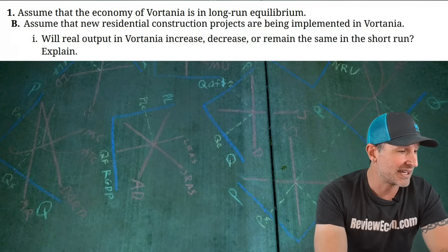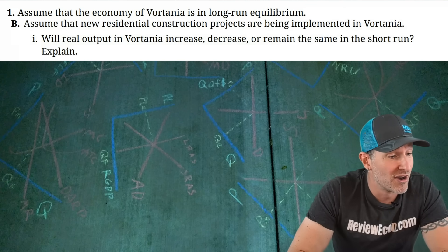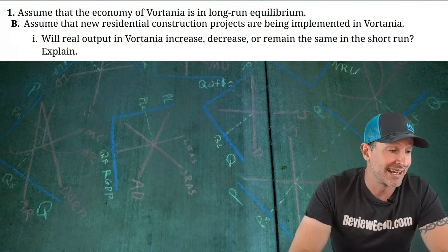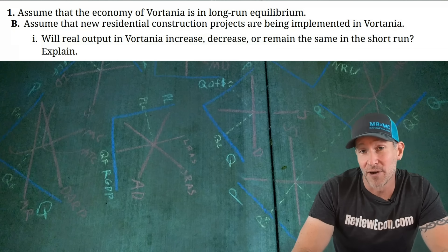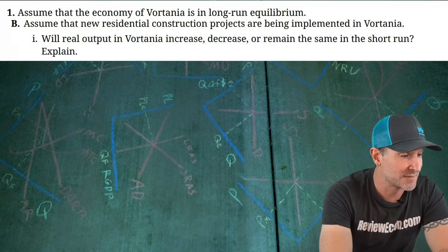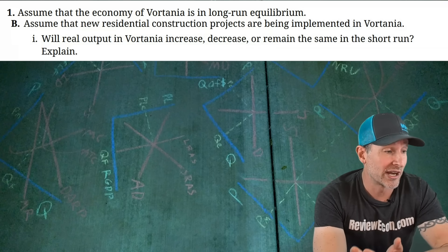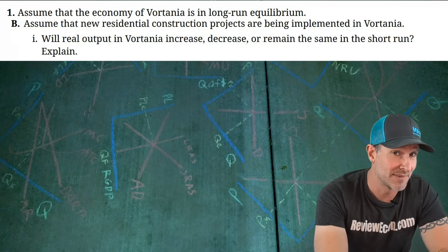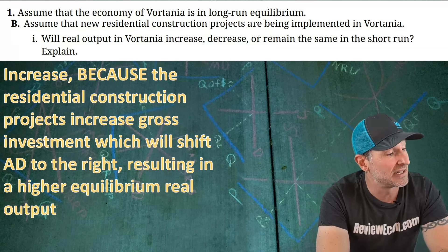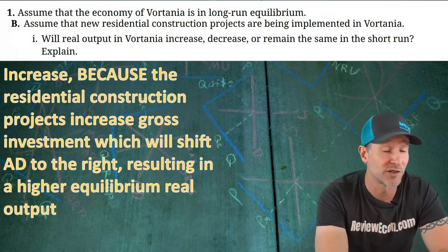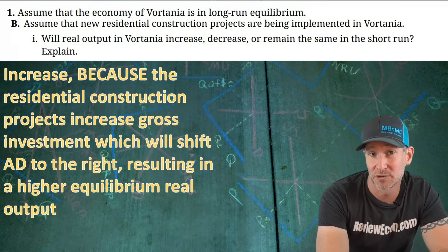Moving on to Part B. It says to assume that new residential construction projects are being implemented in Vortania. Will real output increase, decrease, or remain the same in the short run? Residential construction is considered gross investment, and the 'real output' breadcrumb tells us we should be thinking about the AS-AD model. The answer is increase, because residential construction projects increase gross investment, which shifts AD to the right, resulting in a higher equilibrium real output.